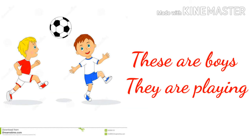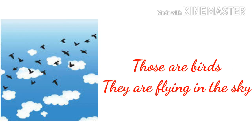These are boys. They are playing. ARE is used before plural words. Those are birds. They are flying in the sky. ARE is used before a plural word.